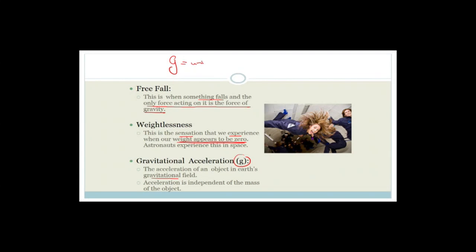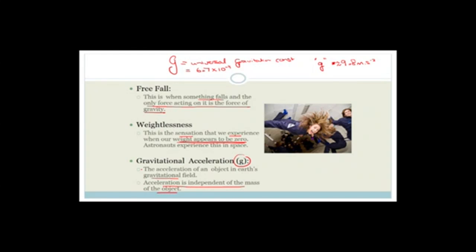Gravitational acceleration is the acceleration of an object in Earth's gravitational field. This is little g, which is very different from big G. Big G is the universal gravitational constant — 6.7 × 10⁻¹¹. Little g is dependent on the planet; it is the acceleration of an object in a planet's gravitational field. On Earth, little g is approximately 9.8 m/s². This depends on where you are on Earth, but scientists have decided that's good enough. Please note that the acceleration is independent of the mass of the object — and we're going to prove that.